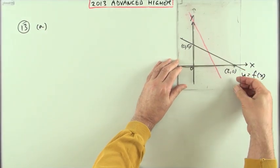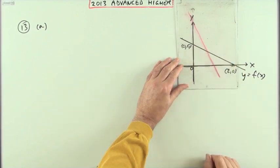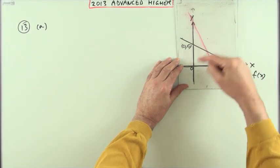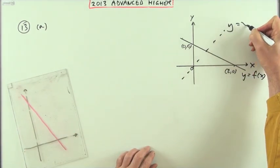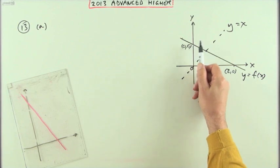Another way of showing that would be to put the line y equals x into it, because the axes would reflect onto each other across the line y equals x.